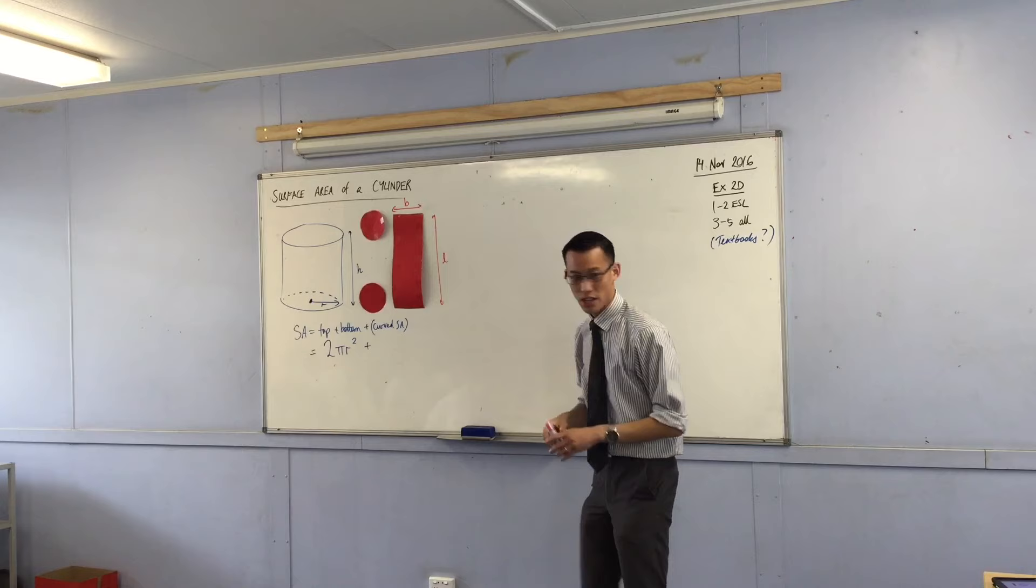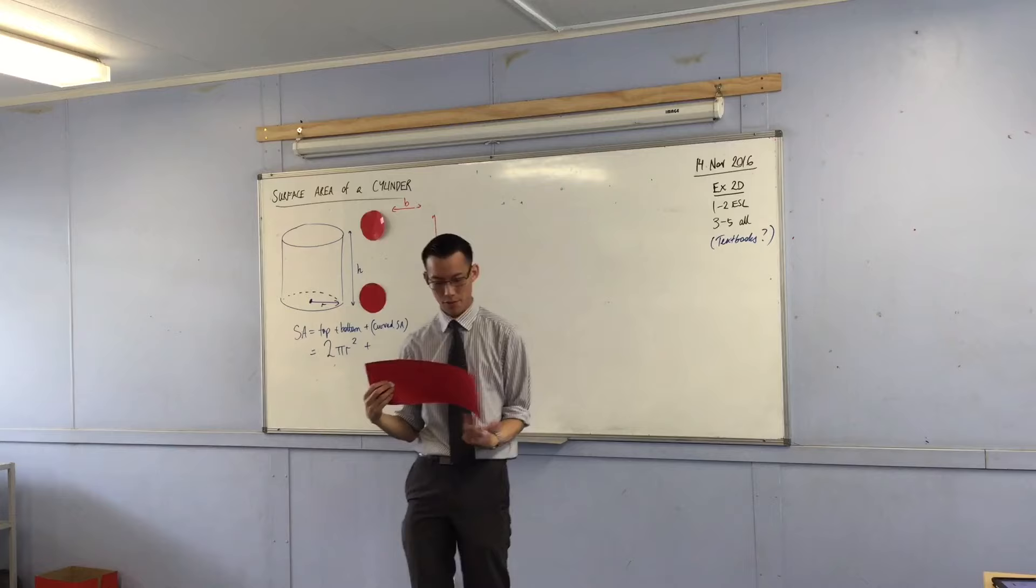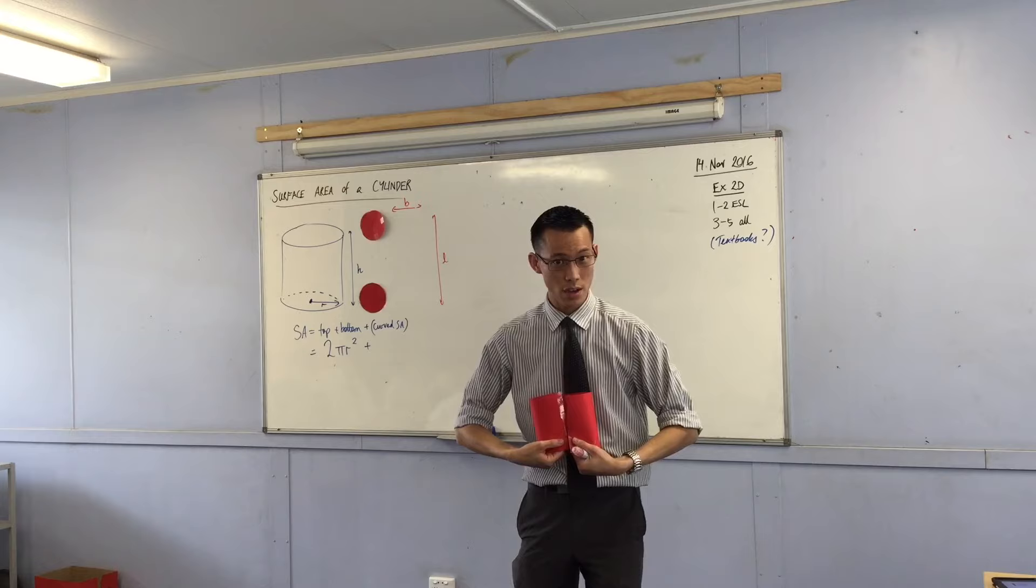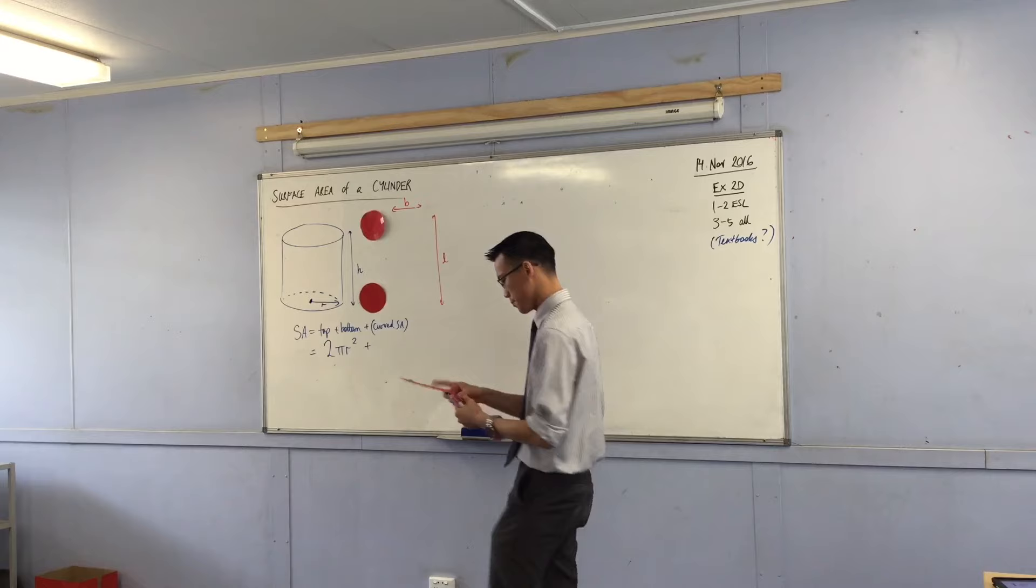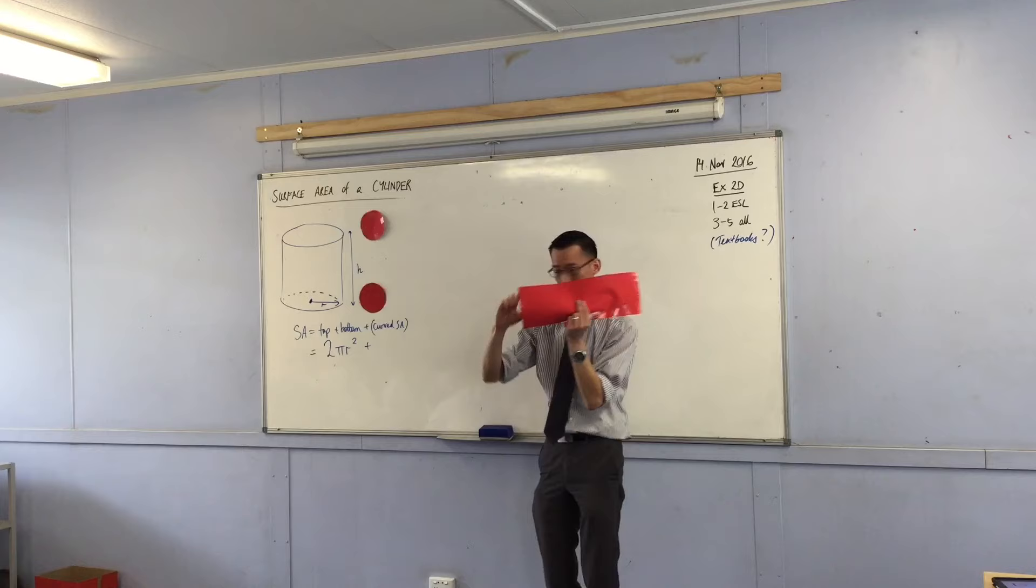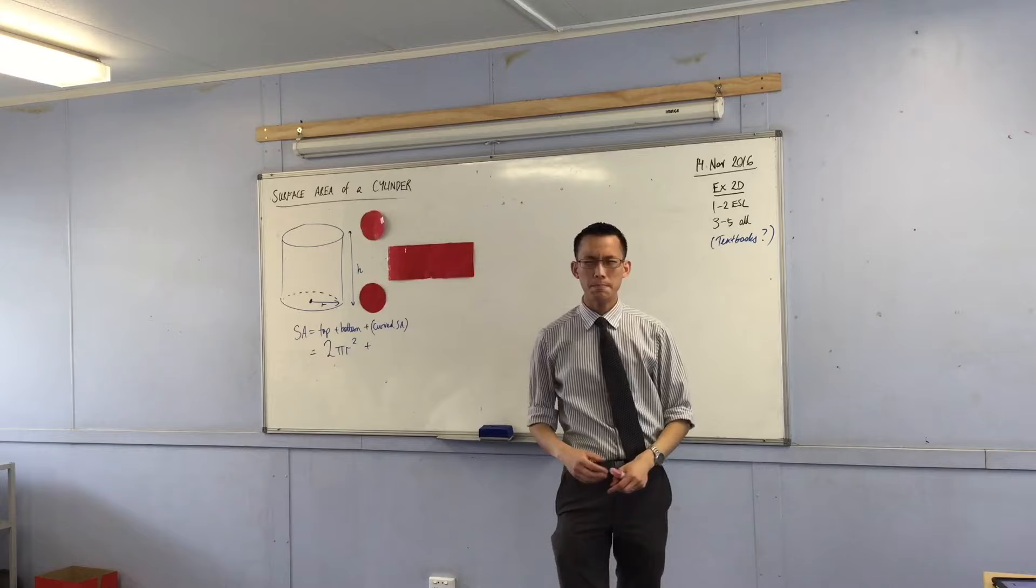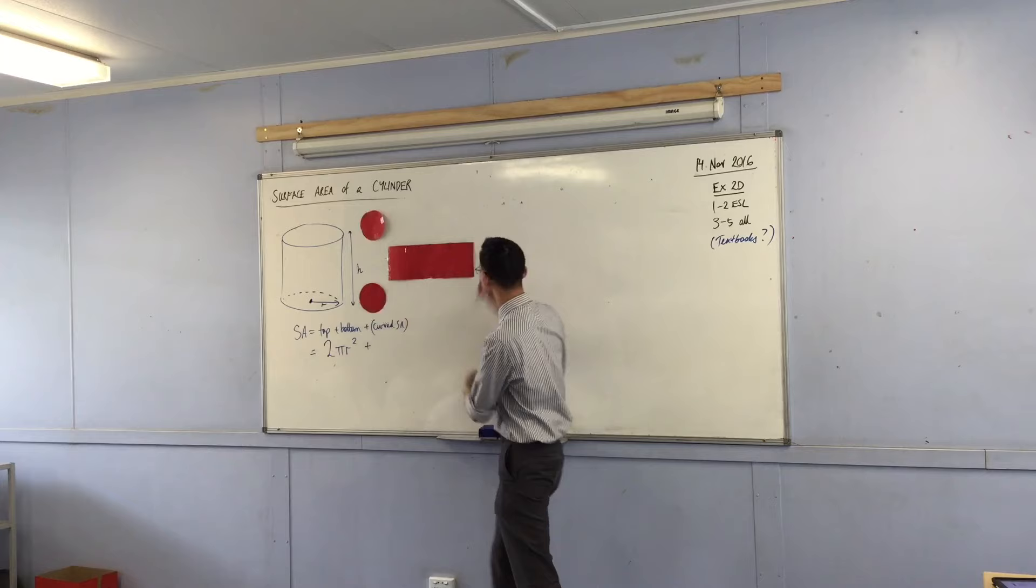Now think about it this way. Actually I've oriented it the wrong way. This was unwrapped, right? So it used to be like this. So I'm holding it up right according to what our cylinders look like on the page. So actually when I unwrap it like this, have a look at this distance up and down. Can you see where this distance here corresponds to on this diagram? Can you see it? This is the height here. This is how high my cylinder was. Do you agree?